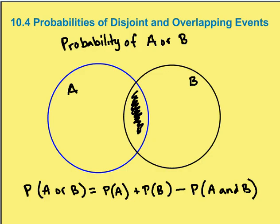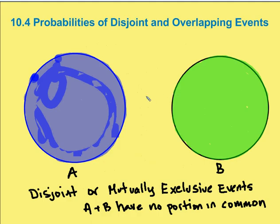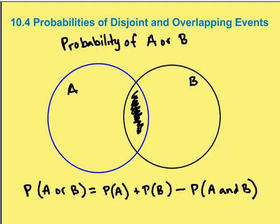Because if you have a disjoint event, there's no portion that's in common. So the value of A and B is going to be zero. So always when you're figuring out the probability of A or B, you say the probability of A plus the probability of B minus the probability of A and B, or that area that you've counted twice that they both have in common.